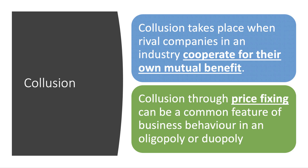Collusion is when rival businesses in a sector or industry decide to cooperate for their own mutual benefit. Collusion can happen in many ways — they can share a market, or they could decide to fix the price. Price fixing is where participants in the market band together to artificially set the price of a particular good or service.